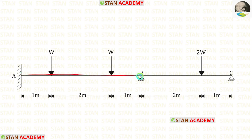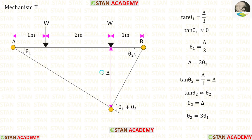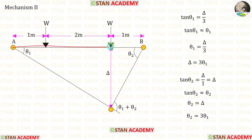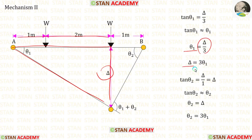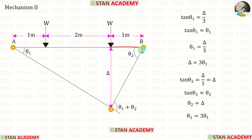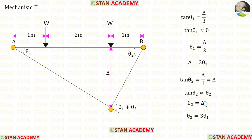Now in span AB we are going to make the second mechanism. In this mechanism, we assume that the third plastic hinge occurs under this other point load. Similar to the first mechanism, the virtual displacement under the load is delta, this angle is theta1, and this angle is theta2, so this angle is theta1 plus theta2. Taking the left side triangle, theta1 equals delta upon 3, so delta equals 3 theta1. Taking the right side triangle, theta2 equals delta upon 1, which is delta. Substituting delta as 3 theta1, theta2 equals 3 theta1.